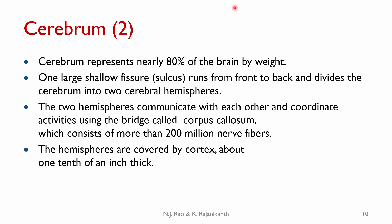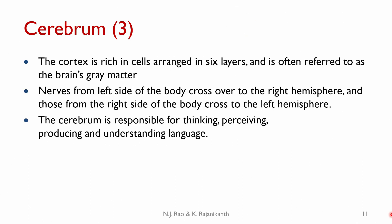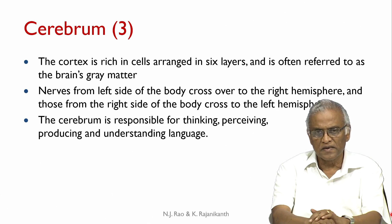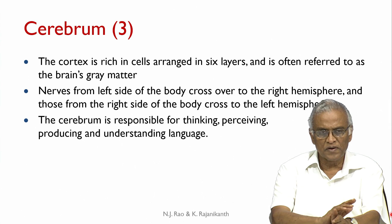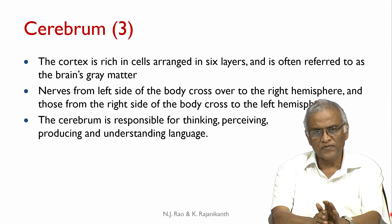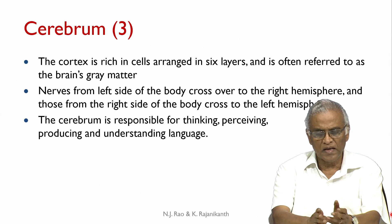The hemispheres are covered by the cortex — the English translation of cortex is the bark of a tree, so it is like a bark, the top layer, about one-tenth of an inch thick. The cortex is rich in cells arranged in six layers and is often referred to as the brain's grey matter. Interestingly, nerves from the left side of the body cross over to the right hemisphere, and those from the right side cross over to the left hemisphere. It is still not completely known why it evolved that way.